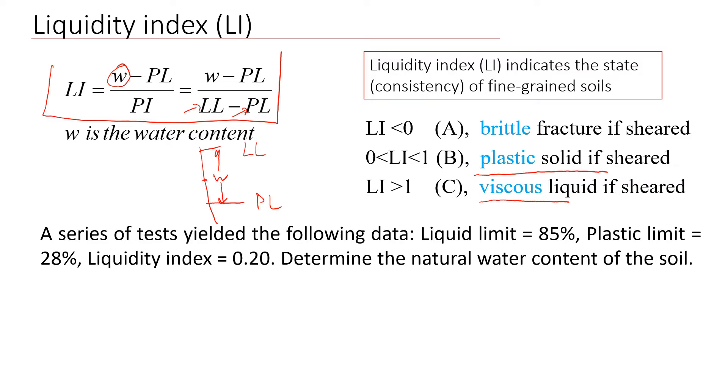And for this particular case, when we have brittle fracture if sheared, this will be probably more on the dry side of the soil. So it will act more like, I don't know, like maybe like a rock. So because brittle failure is common for rocks or something harder.